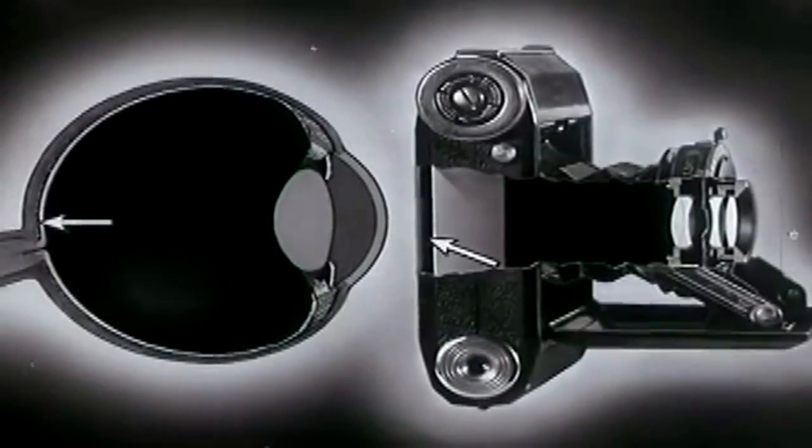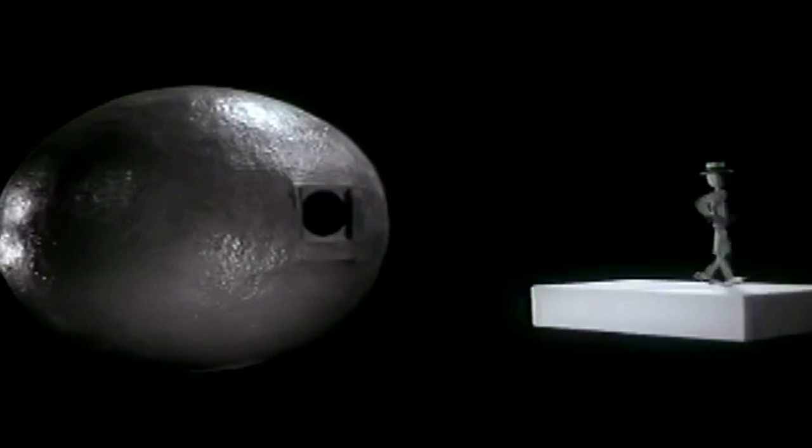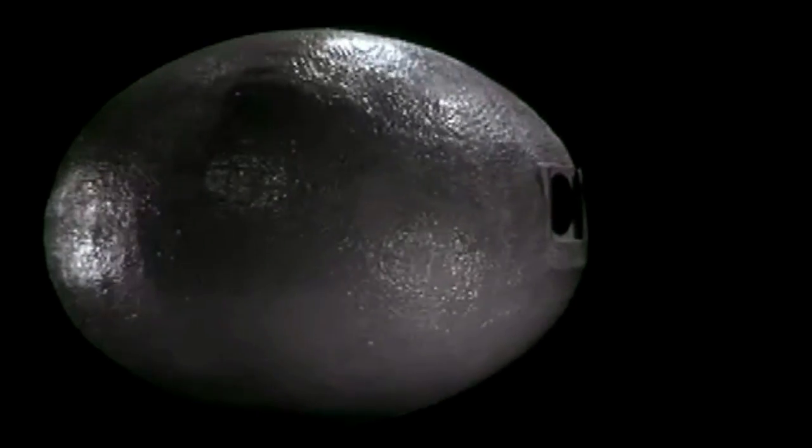For an object to be seen sharply, the light rays coming from it to the eye must be focused so that an image falls exactly on the retina. This eye, which is nothing but a camera in the shape of an eye, shows us what we would see if we had no lens.